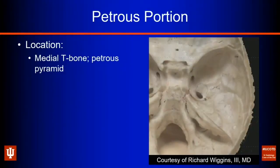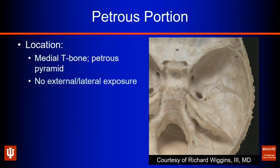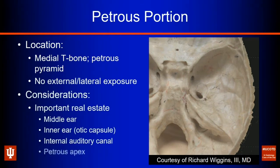The next segment is the petrous portion, a pyramidal-shaped bone denoted in yellow. It has no lateral exposure — unlike other segments, it's entirely housed internally. It contains important real estate: the middle ear, inner ear, the IAC, and the petrous apex, which we'll talk more about.